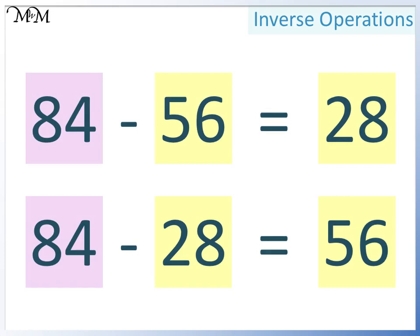In both cases the largest number is at the start, and the two smaller numbers can be swapped. It doesn't matter how tricky the numbers look, because we have been given the addition, so rearranging the numbers correctly must give us the right answer.